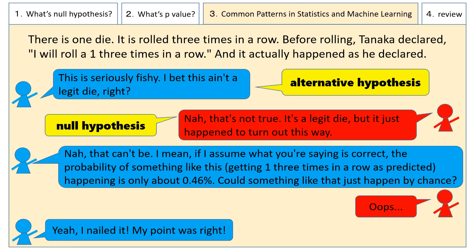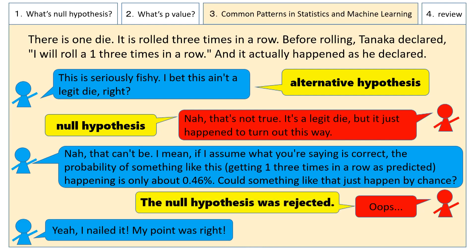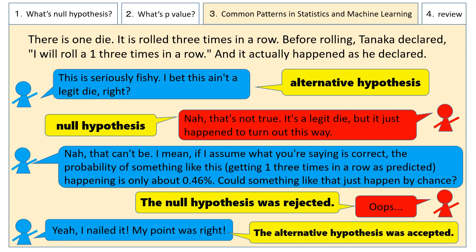By the way, in statistical terminology, when Taylor says "Oops" and the null hypothesis is rejected, it is expressed as "the null hypothesis is rejected." On the other hand, when John wins and the alternative hypothesis is accepted, it is expressed as "the alternative hypothesis is accepted."